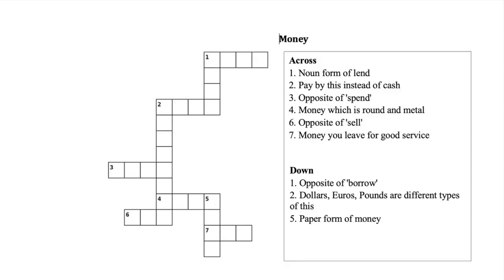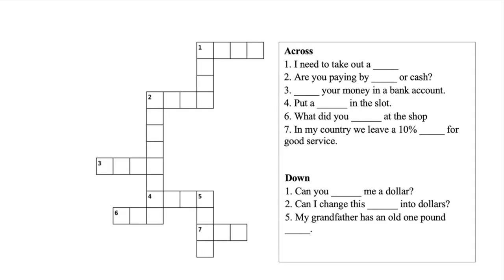Once you've got your basic crosswords, you can play around with the clue format. Sometimes it's nice to make the clues gap fills and instead of focusing on definitions, focus on things like collocations. If we look at one across, I've taken the phrase 'I need to take out a blank, a loan,' so we get that verb-noun collocation 'to take out a loan.'